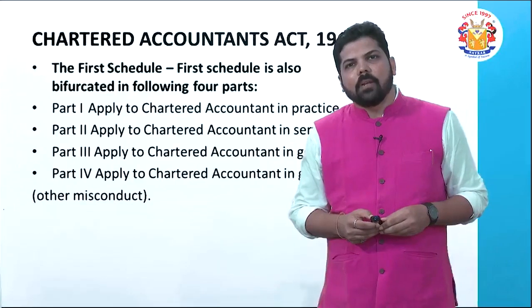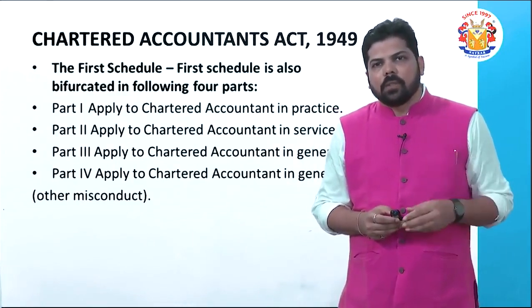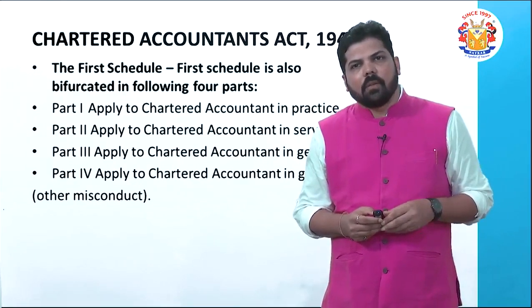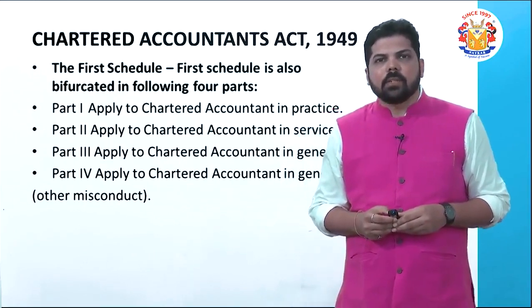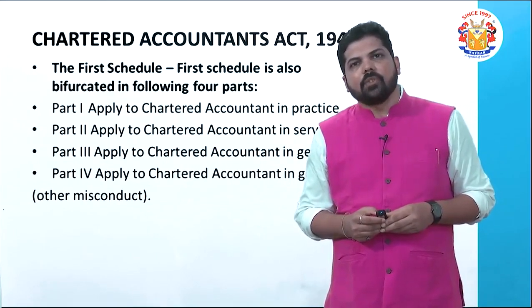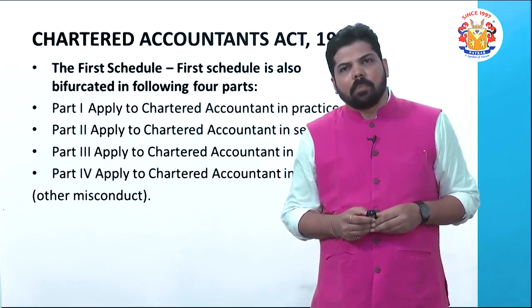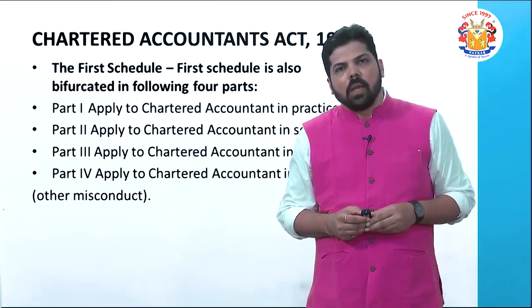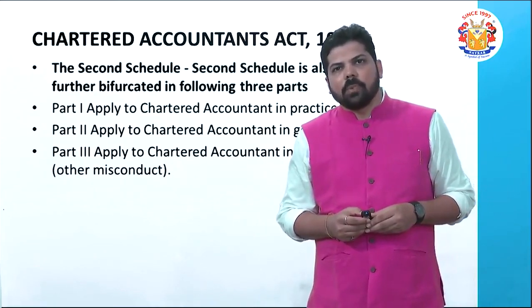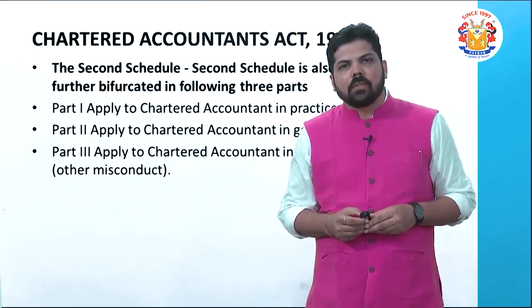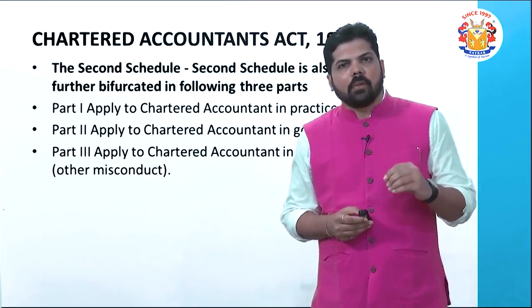The Chartered Accountant Act is basically bifurcated into the First Schedule and Second Schedule. The First Schedule has 4 parts: Part I — council takes decision against CA in practice; Part II — against CA in service; Part III — CA in general; Part IV — other misconduct. The Second Schedule, where the council can refer the matter to the court, is bifurcated into 3 parts: Part I — CA in practice; Part II — CA in general; Part III — other misconduct. Each part has different clauses.